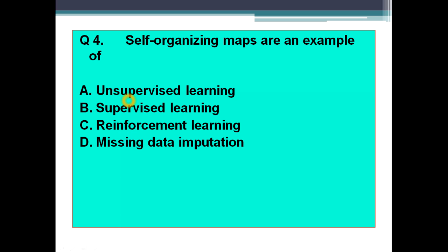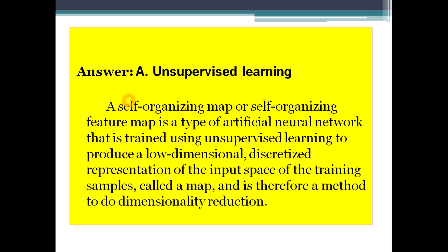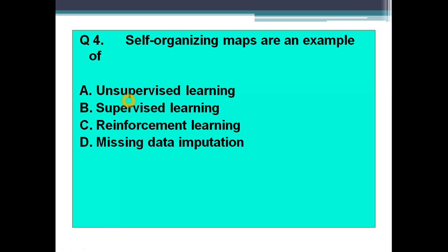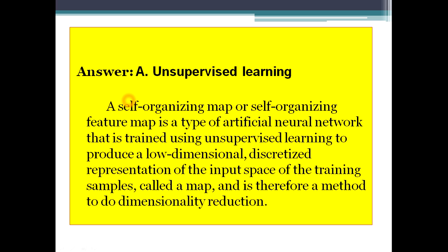Next question: self-organizing maps are an example of — Option A, unsupervised learning; Option B, supervised learning; Option C, reinforcement learning; Option D, missing data imputation. The answer is Option A — unsupervised learning. SOM, or self-organizing maps, is a very popular concept in machine learning unsupervised learning.